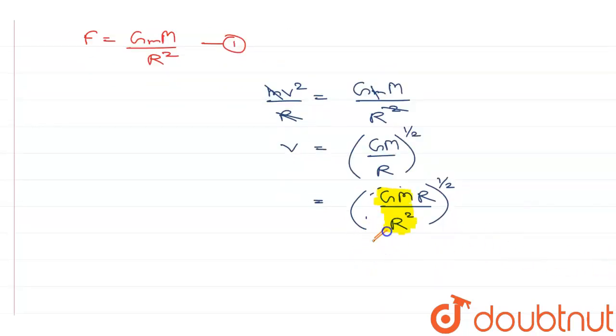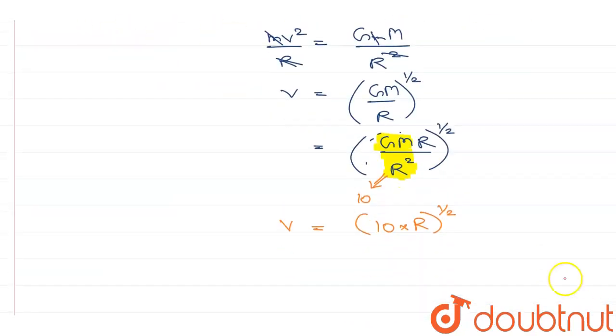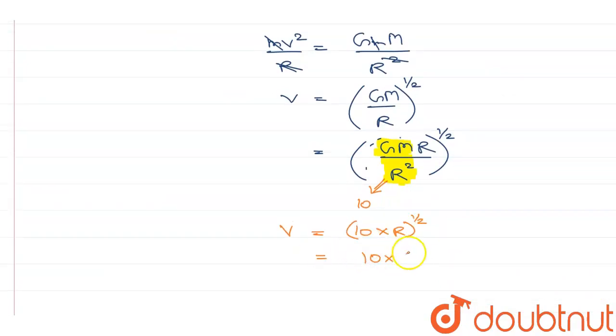So this becomes 10 meter per second squared. That means v is equal to 10 into radius of earth to the power 1/2, and radius of earth in the question is given as 6.4 into 10 raised to power 6 meters. So that gives us 10 into 6.4 into 10 raised to power 6 to the power 1/2, which is equal to 8 into 10 raised to power 3 meter per second.